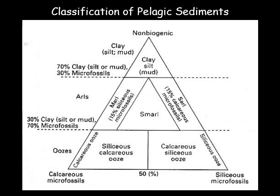Classification of pelagic sediments. Pelagic sediments are classified based on the ratio of the three main components: calcareous microfossils, siliceous microfossils, and non-biogenic components including clay. Biogenic sediments are either calcareous or siliceous, or non-biogenic clay. Settling is the primary mode of deposition. On one end we have oozes, and towards the non-biogenic side are clays consisting of silt and mud.